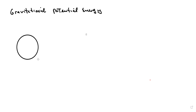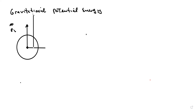Let's put the center of the Earth right here and draw a vector that goes this way — we'll call this vector r1. Then let's draw another vector that comes this way and call it r2.